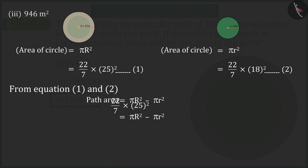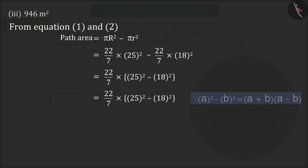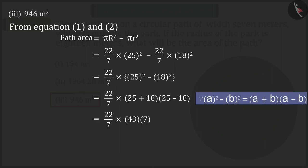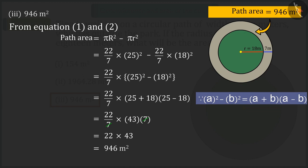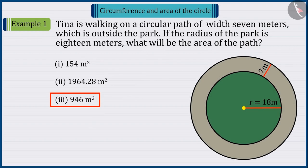So, subtract from equation 1 the equation 2. Which, when solved, gives the area of the path as 946 square meters. So, option 3 is the correct answer.